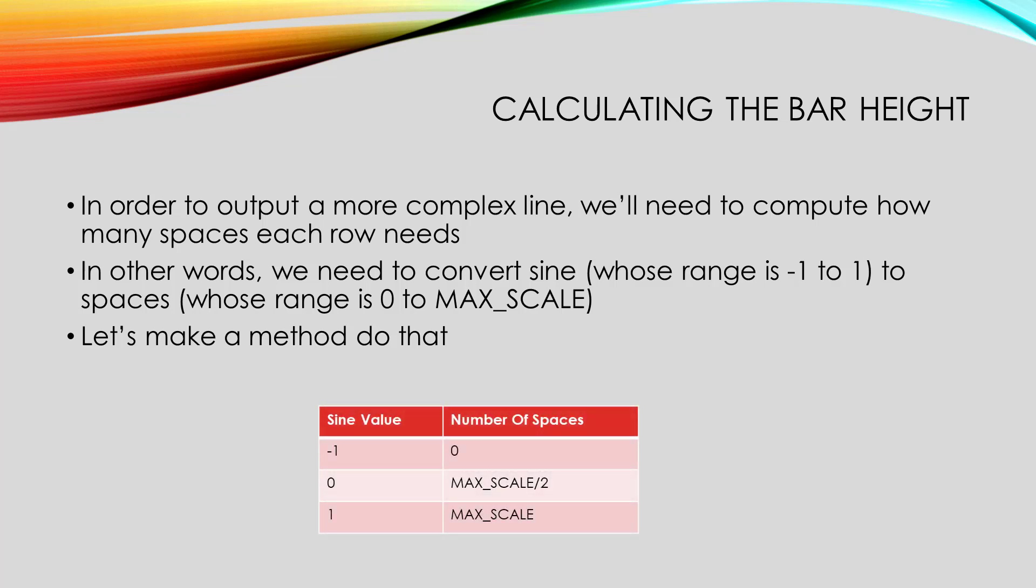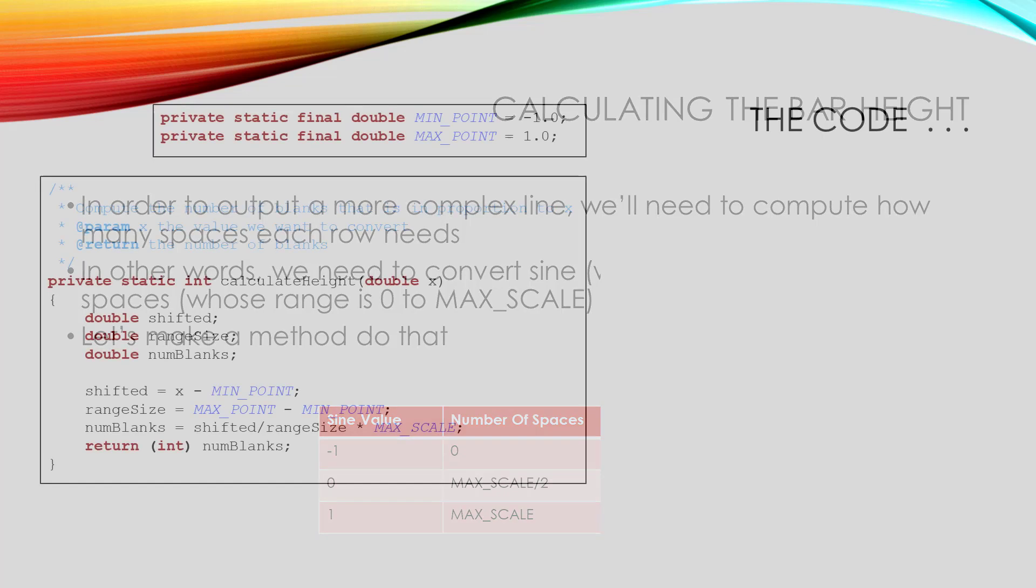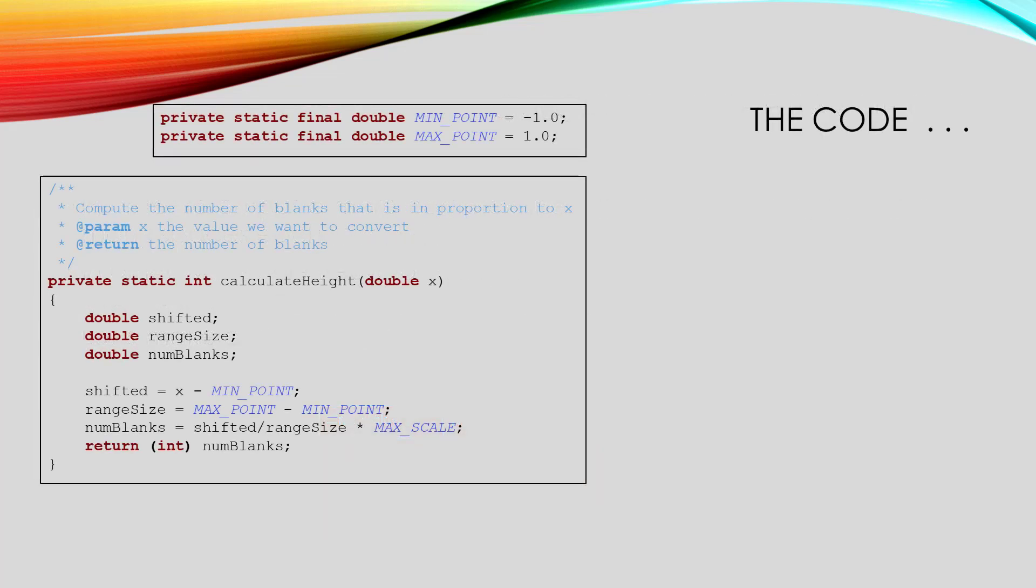Before we get to the code, imagine a few of those conversions to see where we're headed. We want a sine value of negative 1 to print 0 spaces, because the negative 1 is at the left of our scale. We want a sine value of 0 to print out about half of the spaces, because it should be in the middle of the line. And we want a sine value of 1 to print out max scale spaces, because it's all the way to the right of our graph. Here's the code for our conversion, but don't let it overwhelm you. Let's look at it one statement at a time.